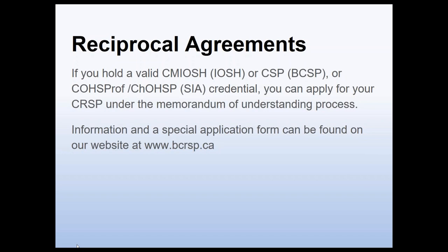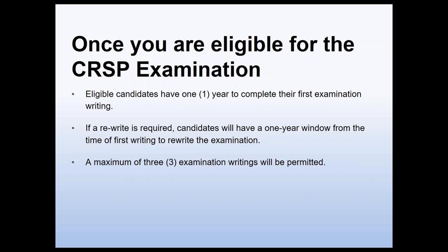A note on reciprocal agreements: if you hold a valid CMIOSH from the Institution of Occupational Safety and Health in the United Kingdom, a CSP from the Board of Certified Safety Professionals, or a Certified or Charter Occupational Health and Safety Professional credential from the Safety Institute of Australia, you can apply for your CRSP under a memorandum of understanding process. Information on this process and a special application form can be found on our website under the Reciprocal Agreements section. Once you become eligible for the CRSP examination, you would have one year to complete your first examination writing. If a rewrite is required, candidates have a one-year window from the time of first writing to rewrite, with a maximum of three examination writings permitted.